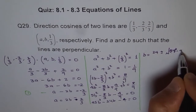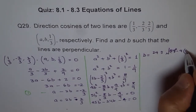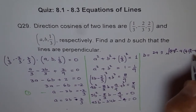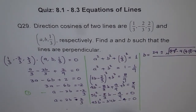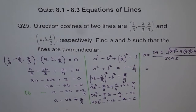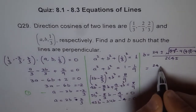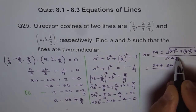Even writing it as 24² - 4 times 45 times -4: the discriminant is 576 + 720 = 1296, and √1296 = 36. So B = (24 ± 36) / 90.